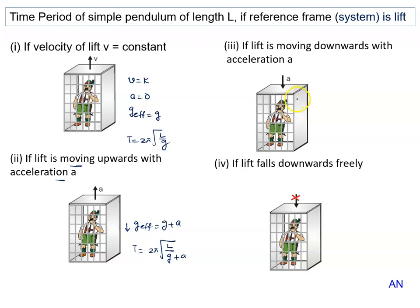Due to pseudo acceleration, effective gravity is downward g minus a. Time period in this situation is 2π root L upon g minus a. And when the lift falls freely...